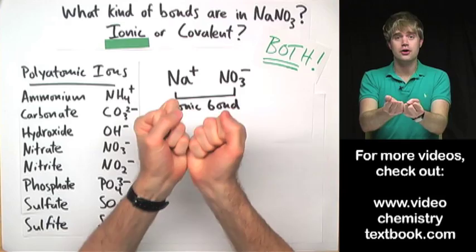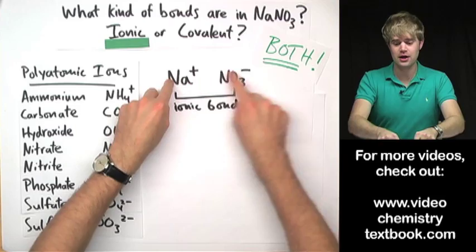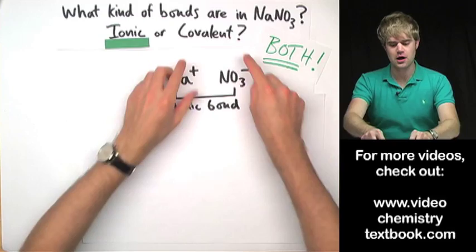So you're totally right that NaNO3 does have ionic bonds. They hold the Na plus together with the NO3 minus. To understand where the covalent bonds come in, we've got to talk a little bit about this NO3.